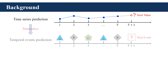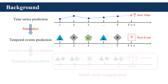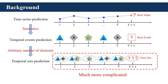If the value is further associated with semantics, we can obtain temporal events. Temporal event prediction is more complicated because we need to additionally handle the semantic information. And one step further, if multiple events happen at the same time and they form a set, we can obtain temporal sets. Temporal sets are formalized as a sequence of sets, where each set has a timestamp and can include an arbitrary number of elements. It's obvious that temporal set prediction is the most complicated.